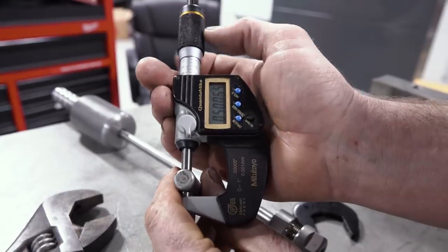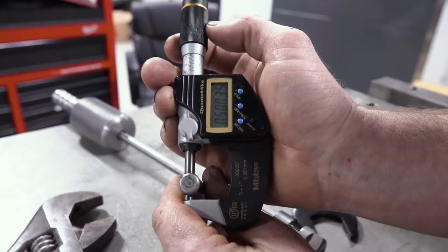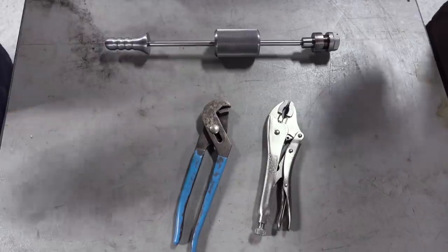But dowel pins, which are generally centerless ground and thus have a little bit of a wider tolerance range than you might think, sometimes get stuck. And I hate using vise grips or pliers to pull them out.